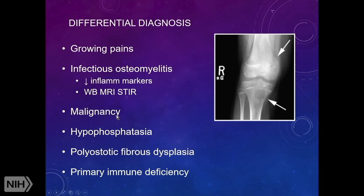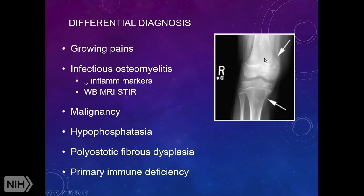Malignancy is the big thing we really have to think about and worry about. A child with intraosseous lymphoma may show an osteolytic lesion on plain films, but it's missing the surrounding sclerosis and shows cortical disruption — very big red flags. You definitely need to biopsy, and maybe biopsy multiple times if you're concerned it's cancer. Hypophosphatasia can be screened with alkaline phosphatase. Polyostotic fibrous dysplasia has a very different radiologic appearance, and a good pediatric musculoskeletal radiologist can usually distinguish it.